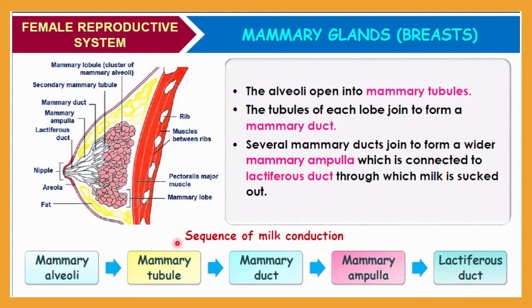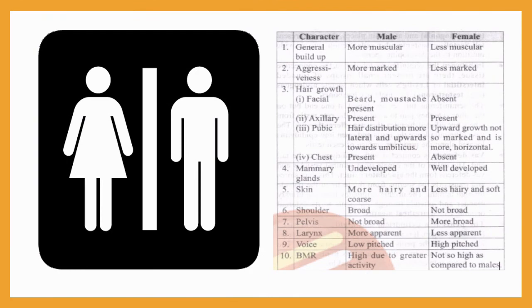The sequence of milk conduction is: milk is first secreted into the mammary alveoli where it is stored, then transferred to the mammary tubule, then passed to the mammary duct, then reaches the mammary ampulla, and finally reaches the lactiferous duct.